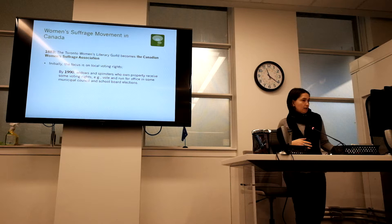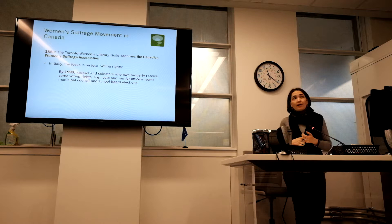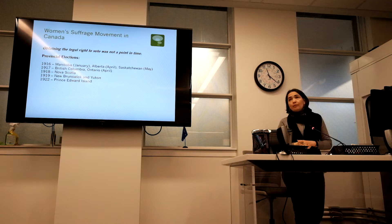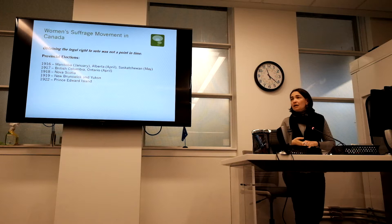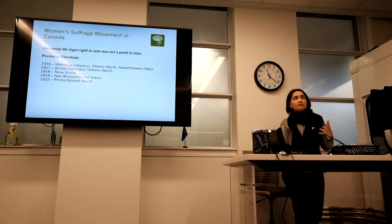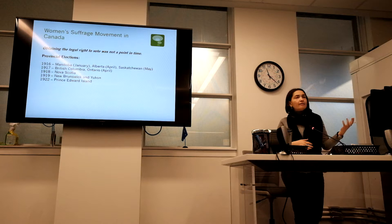The idea was that if you don't have a man in the house — if you're a widow or never married — you're allowed to vote. If you do have a man in the house, that's his job to go and vote. Obtaining the legal right to vote was not a single point in time. When we say we're celebrating the centennial, it refers to one specific date — when women were granted the right to vote federally. But it was actually a collection of dates over several decades.